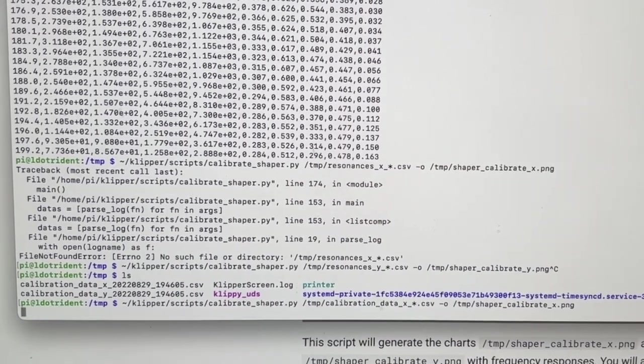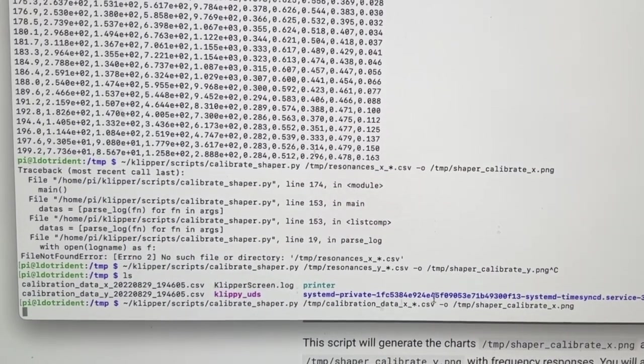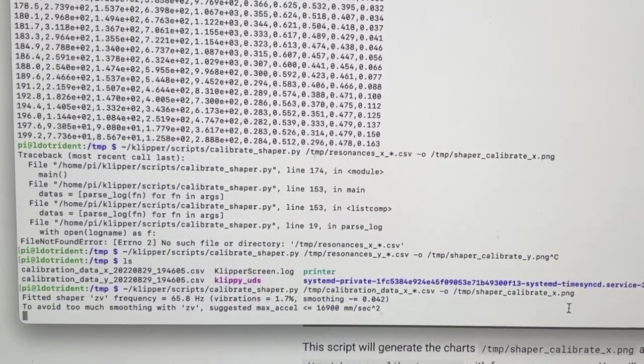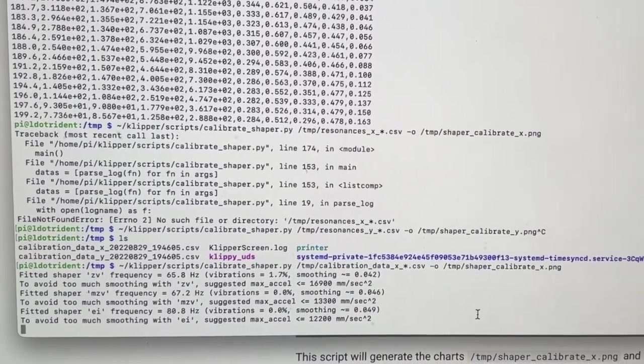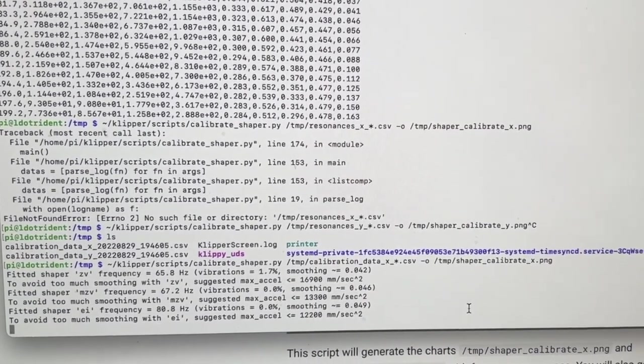So I renamed it to that or renamed it in the command. So now that's going to go ahead and create my graph of that. And you can see it's outputting that right now. And then I'll do the same thing for the Y.